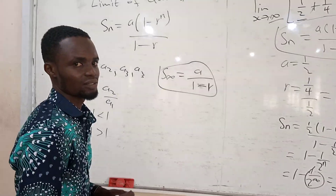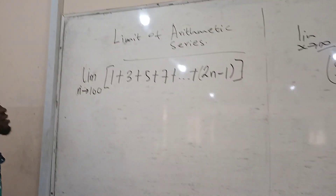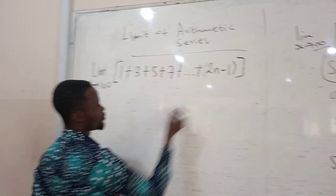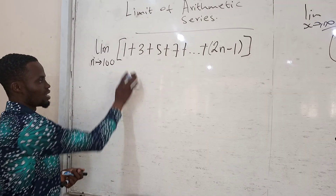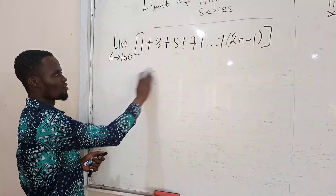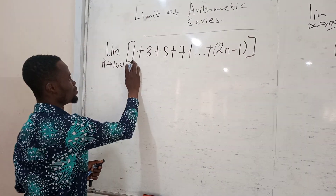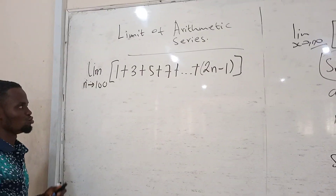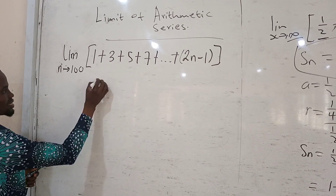The next example we will talk about is the arithmetic sequence. The arithmetic series is when you find the common difference between terms and they are all the same. If you check the common difference here, they are all 2, so the common difference is 2.